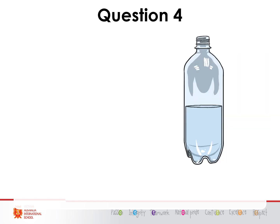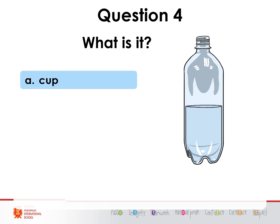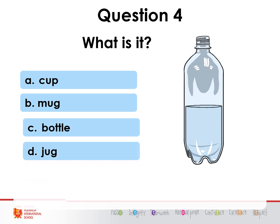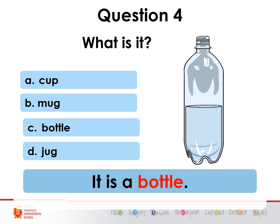Question four — what is it? A) a cup, B) a mug, C) a bottle, or D) a jug. You should know this one. That's right, it is a bottle. It's a bottle.